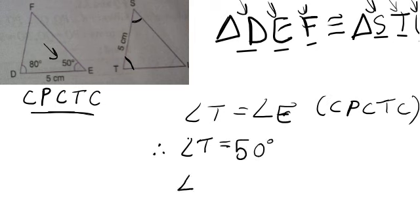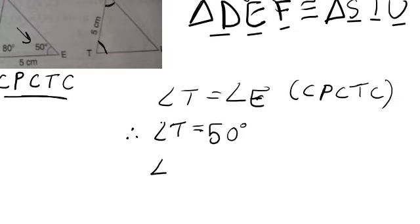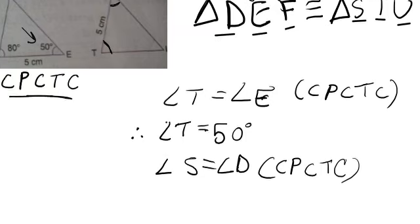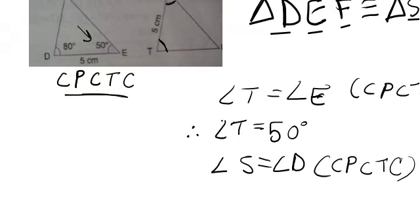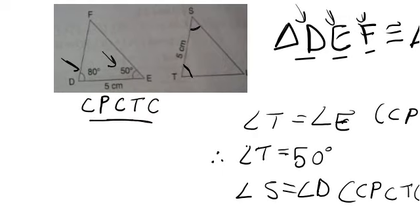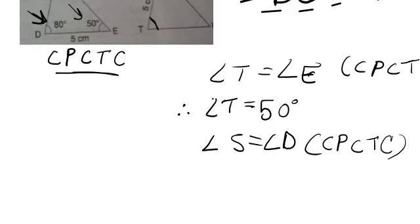Then angle S equals to angle D. So angle S equals to angle D and same reason will be there, that is corresponding parts of congruent triangles are congruent. Now this S is the measure of S we have to find, but the measure of angle D is given, that is 80 degrees. Therefore, angle S equals to 80 degrees. This becomes our answer. S is 80 degrees, whereas T is 50 degrees.